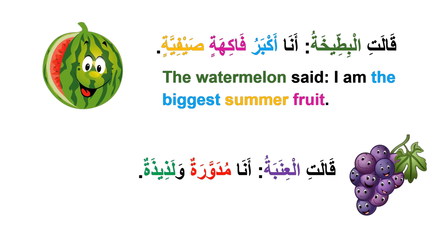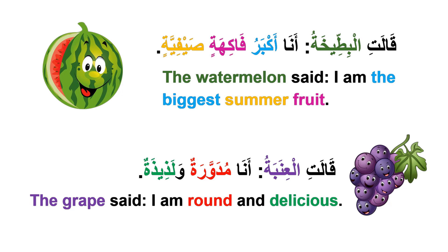The grape said: قالت العنبة، أنا مدورة ولذيذة — I'm round and delicious. مدورة means round, لذيذة means delicious.